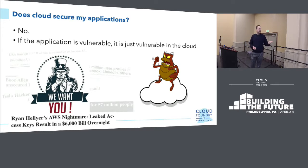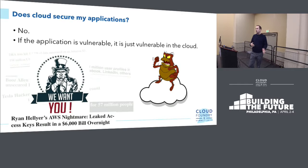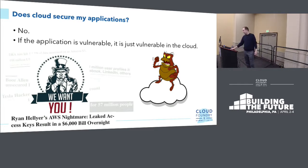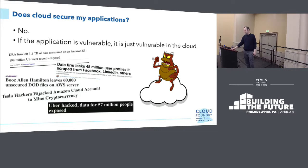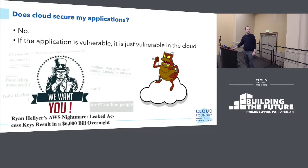Ryan Hellyer was just an individual developer who went to bed and woke up in the morning with a $6,000 bill from Amazon because someone had taken over his account credentials, gone in, and provisioned a series of instances that mined cryptocurrency. Whether that cryptocurrency is worth anything is beside the point — it was worth about $6,000 to him that he was on the hook for because it's his account.